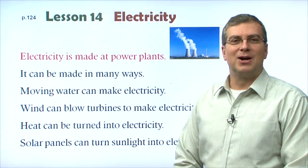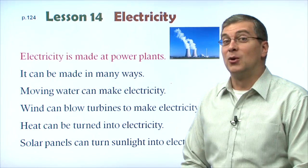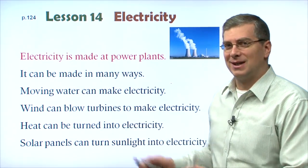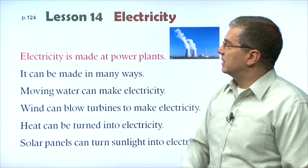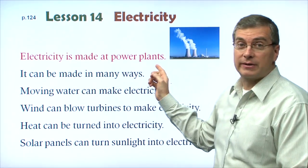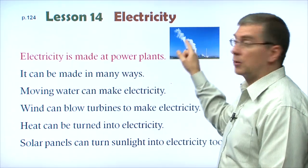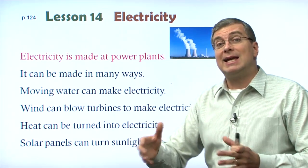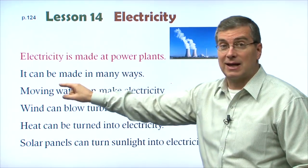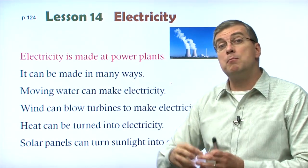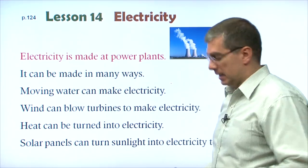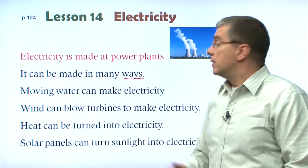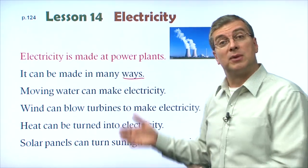Hello, kids. Welcome back. We're going over the reading section for Lesson 14. Remember, Lesson 14 is about electricity. So let's read a short essay about electricity. Electricity is made at power plants. We talked about the vocabulary — this is our picture of a power plant. So electricity is made here. But of course, electricity is made in many ways — not just here. That's our next sentence: it can be made in many ways. Many different methods or different ways to do something.